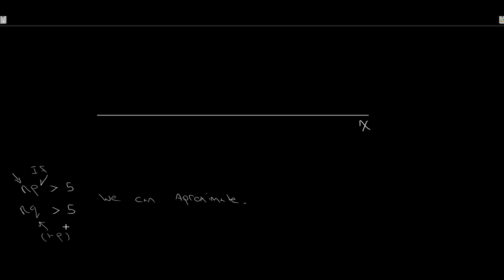For example, if we have n equals 12 with p equals 0.5, this condition is met. n times p gives us 6, and n times q also gives us 6 — both greater than 5. We're good to go and have met this condition.